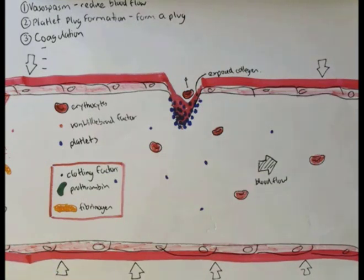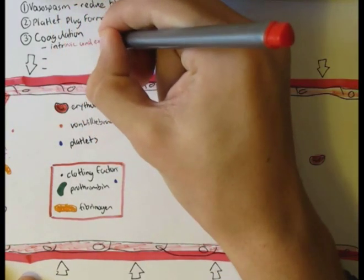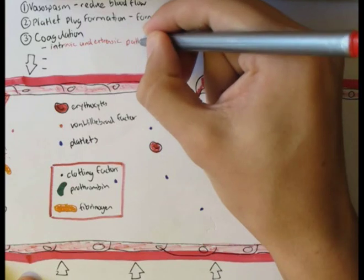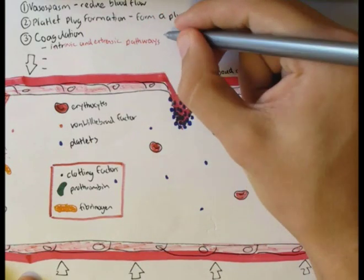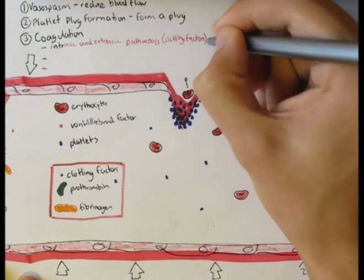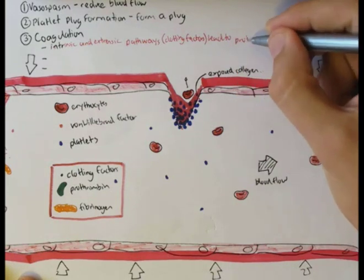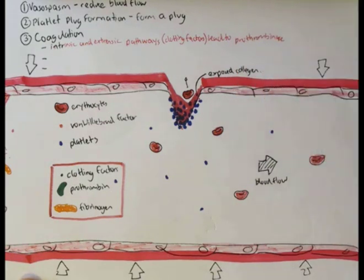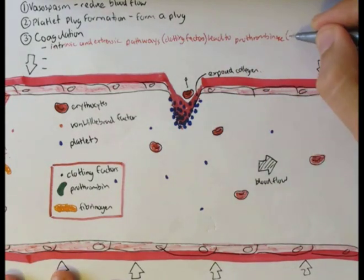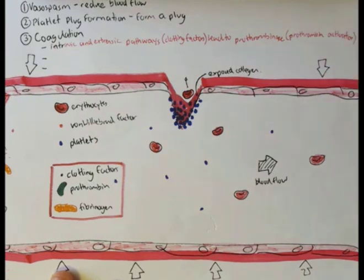This complex clotting process can be divided into three main steps in coagulation. Firstly, because the vessels are injured and platelets have aggregated, a series of reactions involving many clotting factors occur. There are two pathways involving these clotting factors, the intrinsic and extrinsic pathways. Both, however, result in the same substance: prothrombinase, also known as prothrombin activator.